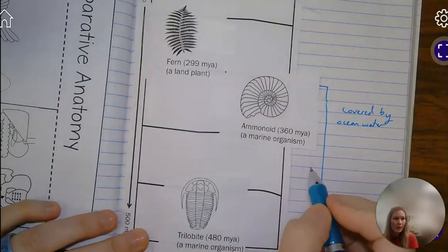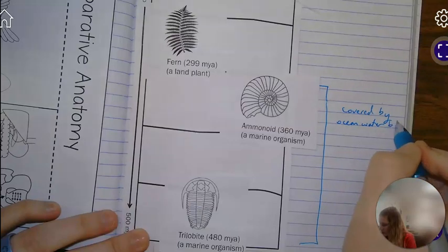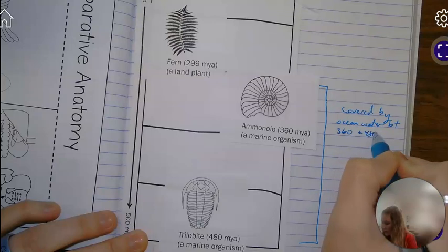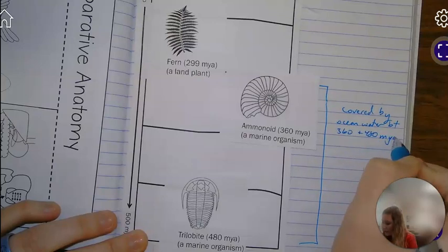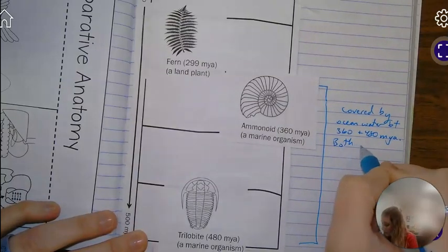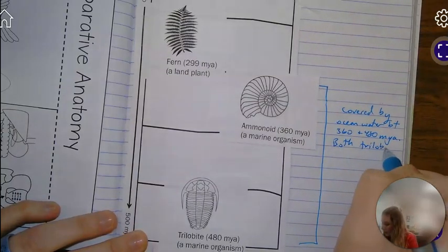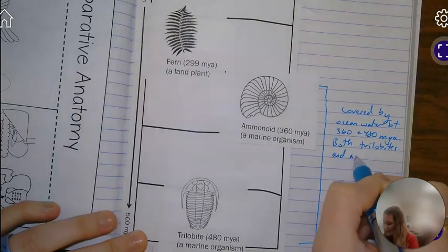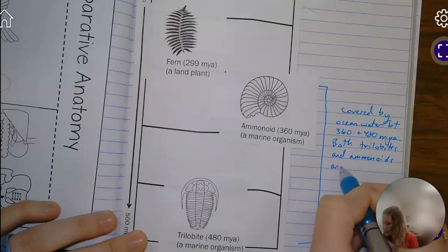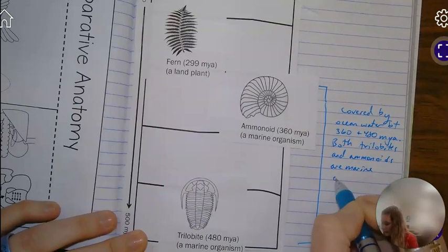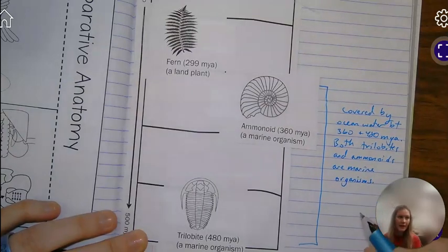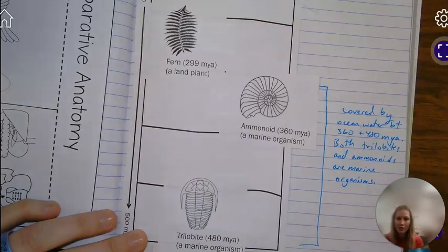So somewhere between 360 and 480 million years ago, because both trilobites and ammonoids are marine organisms, they must have been in the ocean.